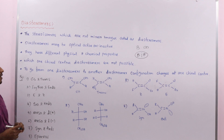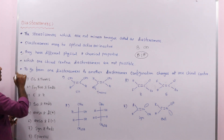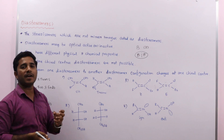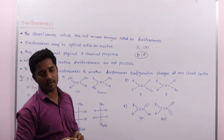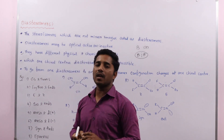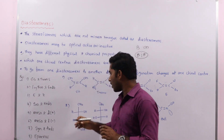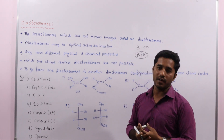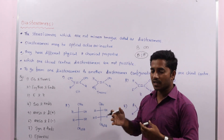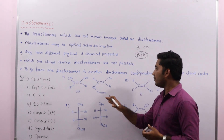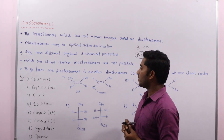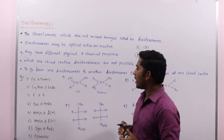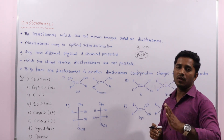Two very important points: diastereomers have different physical and chemical properties — the physical and chemical properties of diastereomers are different from each other. And with only one chiral center, diastereomers are not possible.